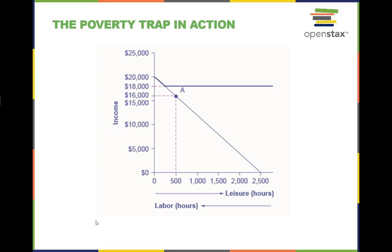Here is an example of the poverty trap using a graph. The original choice is 500 hours of leisure and 2,000 hours of work at point A, with income of $16,000. With a guaranteed income of $18,000, this family would receive $18,000 whether it provides zero hours of work or 2,000 hours of work. Only if the family provides around 2,300 hours of work does its income rise above $18,000, and even then the marginal gain from working many additional hours is small.